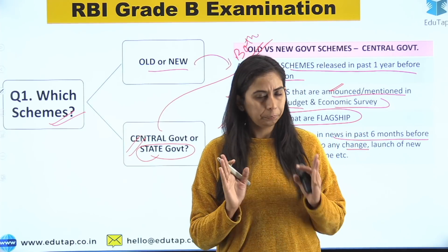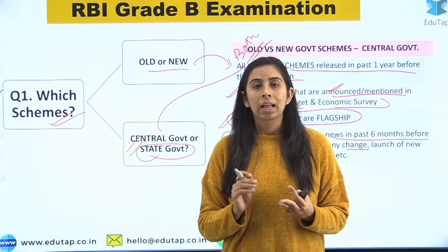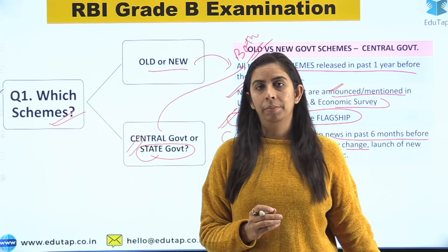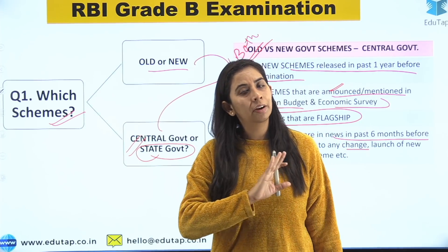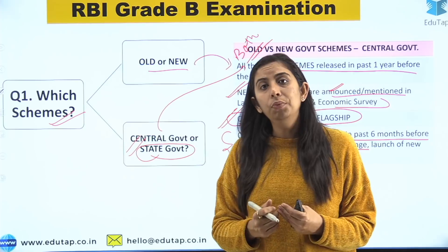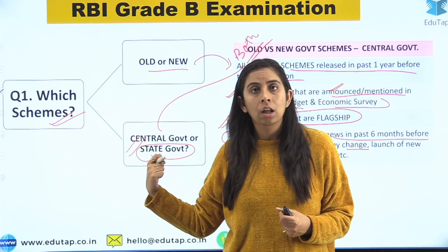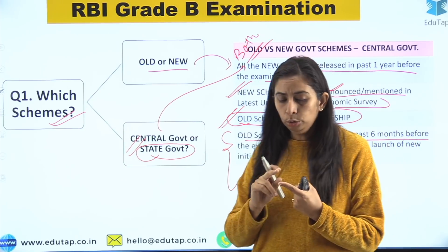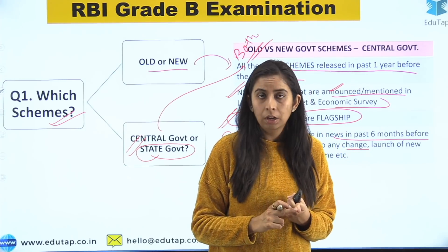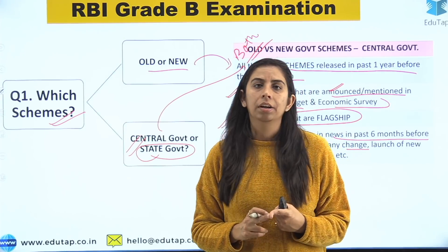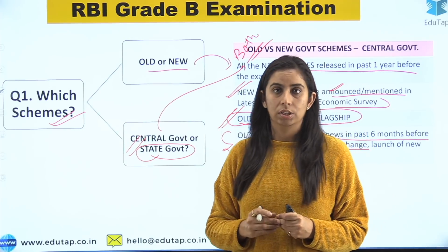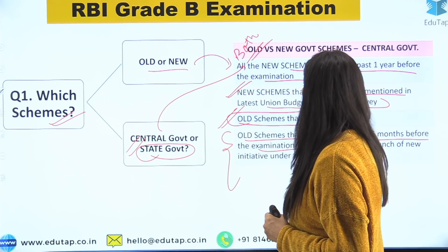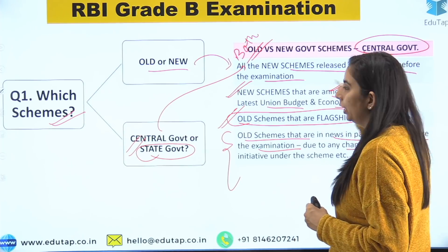The next important thing: old schemes that are in the news in the past six months before the examination. 'In news' means due to any change — perhaps some initiative was launched, a mobile app was launched, some amount was given by the government, or the scheme has completed 10 years or any anniversary. Whatever the reason, if an old scheme is in the news, you will cover that. To summarize: cover new schemes released in the past one year, cover flagship old schemes, and cover old schemes that have been in news recently.